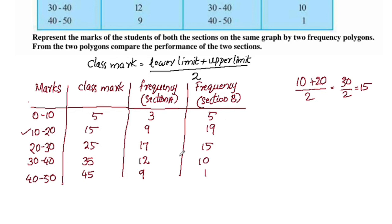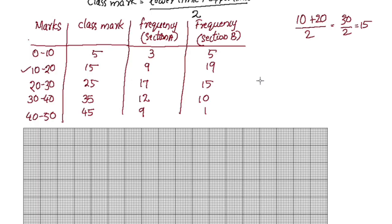Now we have to modify the table. The class intervals are the same for section A and section B, so we need to adjust the table. We will go directly to the graph and adjust the x-axis and y-axis accordingly.